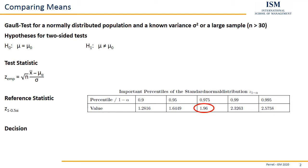For the decision, we simply compare the test and reference statistic. If the test statistic in absolute value is smaller than the reference statistic, we retain H0. Otherwise, if it's larger, H0 is rejected — meaning there is a significant difference between the arithmetic mean and the testing value.